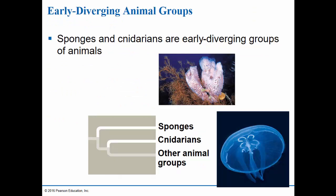Sponges and cnidarians are two of the groups that diverged from other animals the longest time ago. In a moment, we'll go over their bodily structure and how it's relatively simple when compared to other types of animal groups.